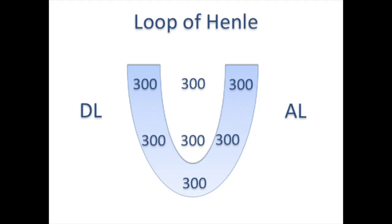The ascending limb, especially the thick part, actively removes sodium and other ions into the interstitium, whereas the descending limb is only permeable to water. Let's assume that the osmolality of the descending limb, ascending limb, and the interstitium is equal to that of the plasma osmolality, which is around 300.